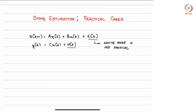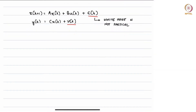If it is stationary noise, it could either be white or a stationary colored noise. If it is non-stationary noise, it could either be integrating white noise or integrating white noise that is passed through a linear filter. All of these cases can be easily handled in the standard state estimation framework that we have discussed so far.